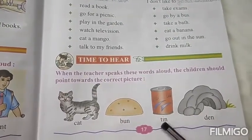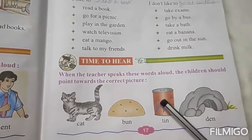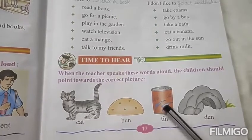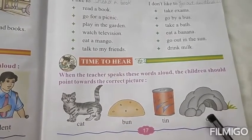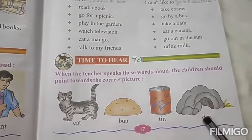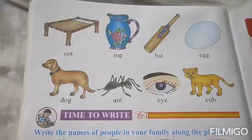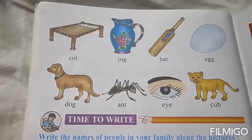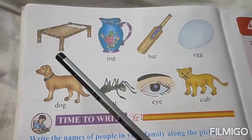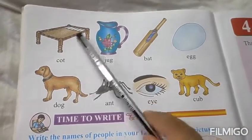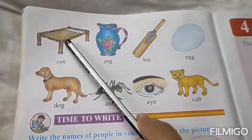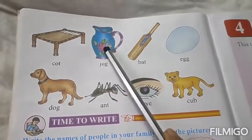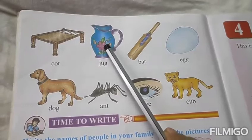Tin. T-I-N, tin. This is a tin can. Den. D-E-N, den. Now, turn the page — page number 18. C-O-T, cot. This one is cot. J-U-G, jug. This is a picture of a jug.